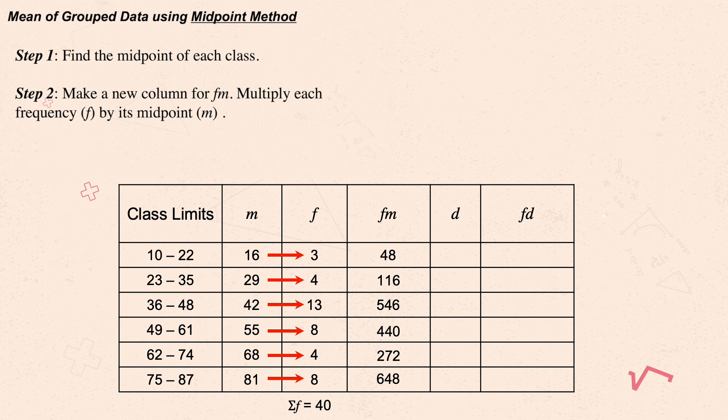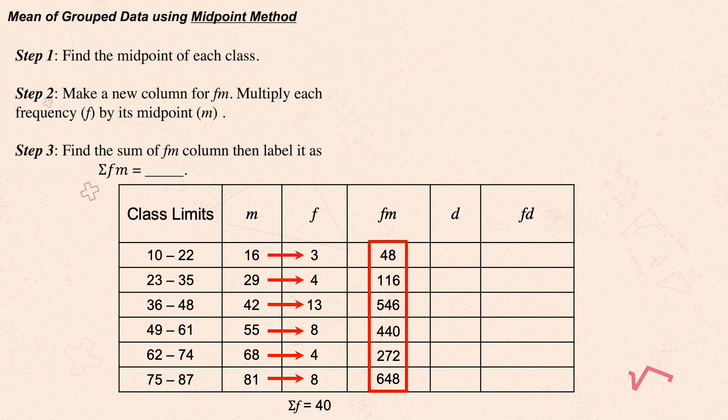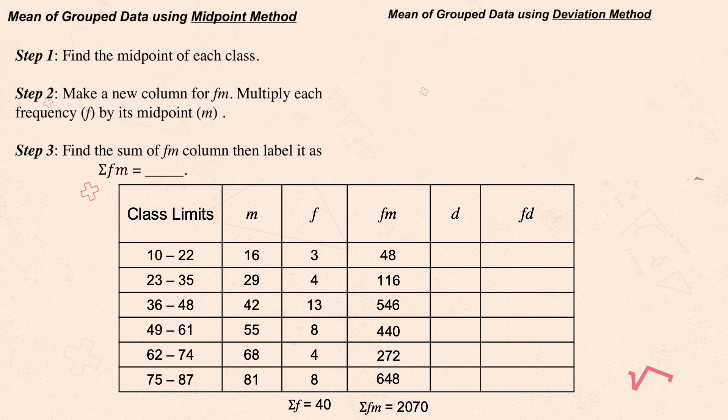Step three is to find the sum of fm, labeled as sigma fm. In this case, sigma fm is 2017.